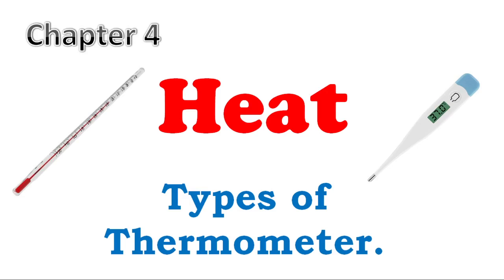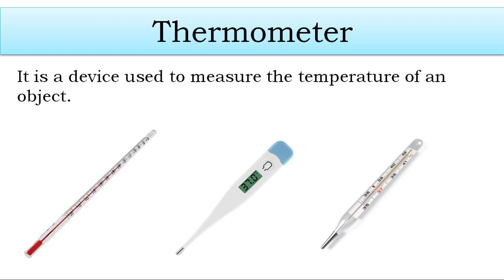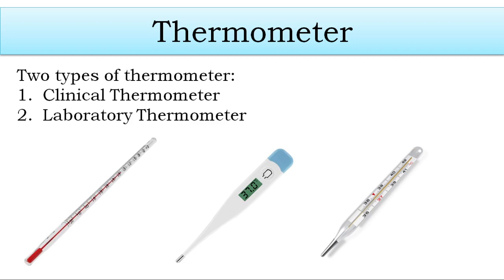Hello to all the Class 7 students. In this second video on Chapter 4, Heat, we are going to discuss types of thermometers. In our previous video we discussed what is heat and how we measure the temperature of an object. We can measure temperature using a device called a thermometer. There are two types discussed in detail in your textbook: the clinical thermometer and the laboratory thermometer.